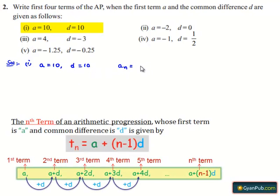the nth term is given by an = a + (n-1)d, which is here an = 10 + (n-1) × 10,